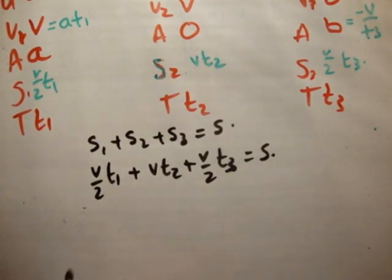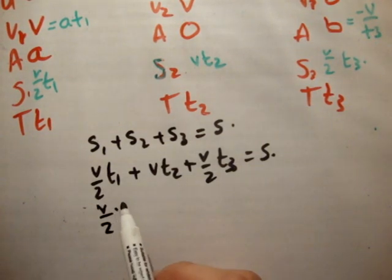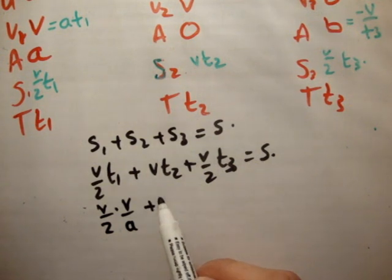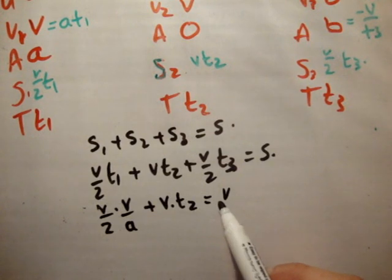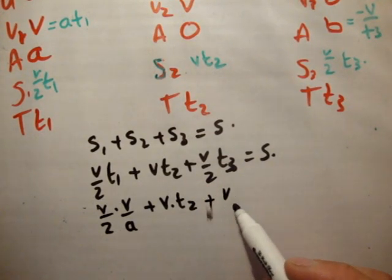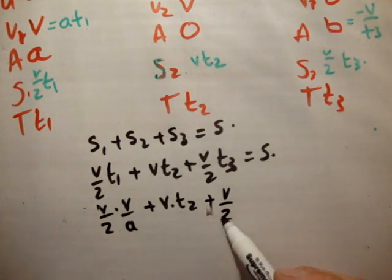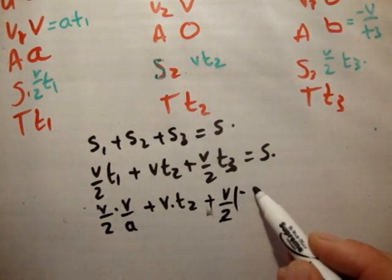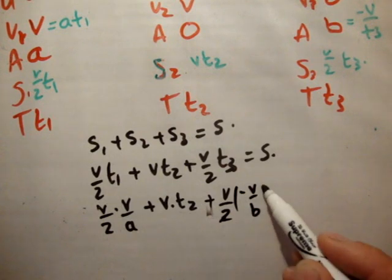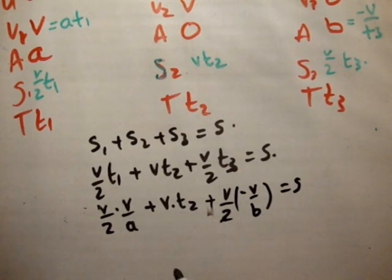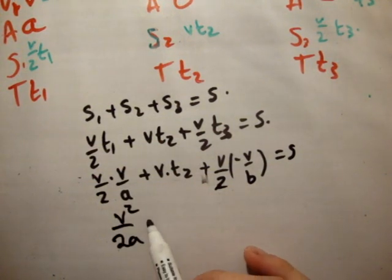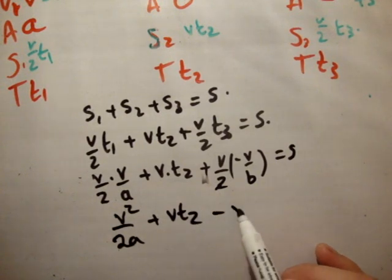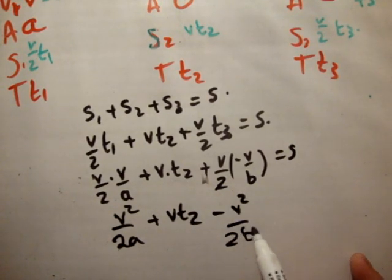So, we know that t1 is equal to v over a. So, we'll say v over 2 times v over a, plus v times t2. Sorry, it's not equal to. It's plus v over 2 times t3, which is minus v over b. That's equal to s. So, we have that v squared over 2a, plus v times t2, minus v squared over 2b, is equal to s.